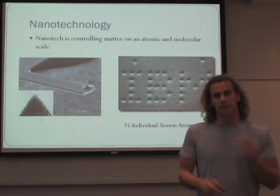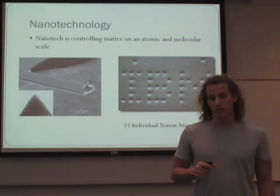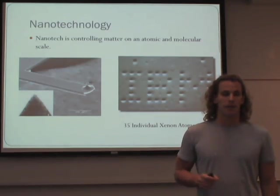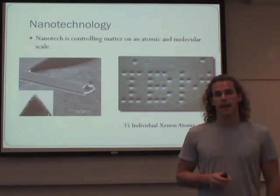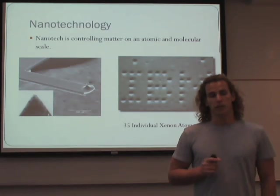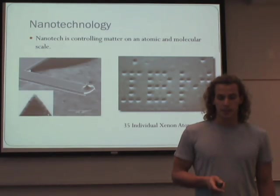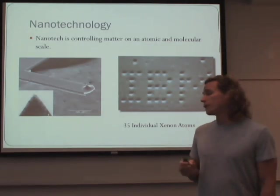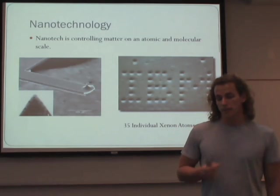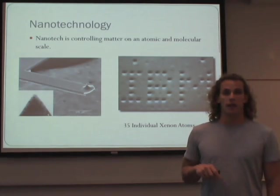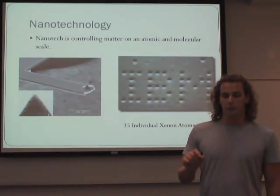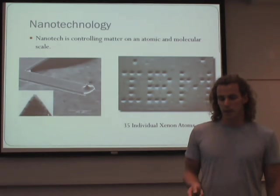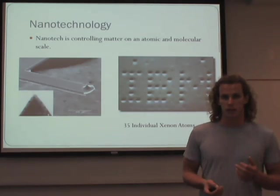So what exactly is nanotechnology? Nanotech is controlling matter on an atomic and molecular scale. One of the first ways that this was done was back in the late 80s. If you look at the image on the left, that's something called a cantilever — the tip of which is actually only a few atoms wide. Scientists at IBM used that a few decades ago and were able to move single atoms of xenon and arrange them to spell out the letters IBM. That's an amazing accomplishment and really is what started the whole nanotech craze.